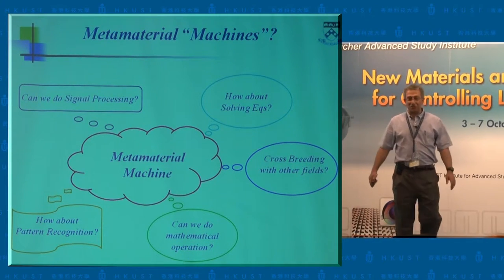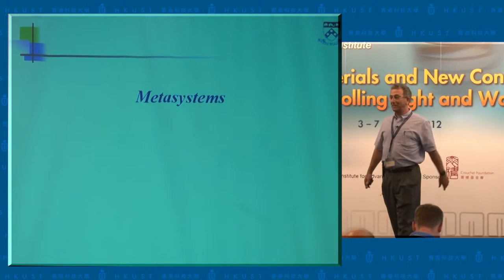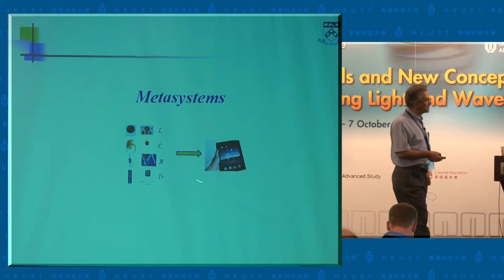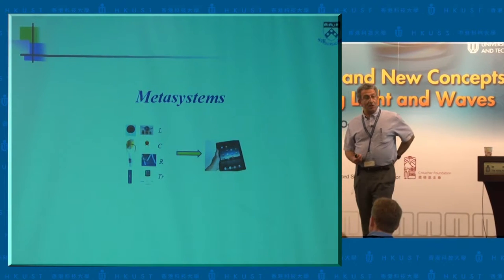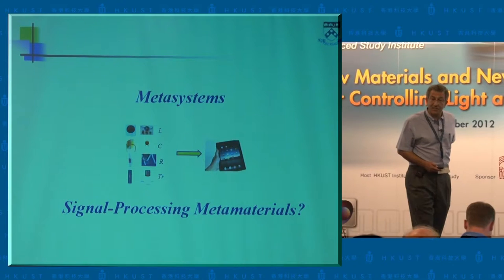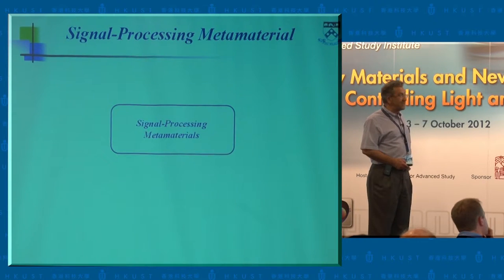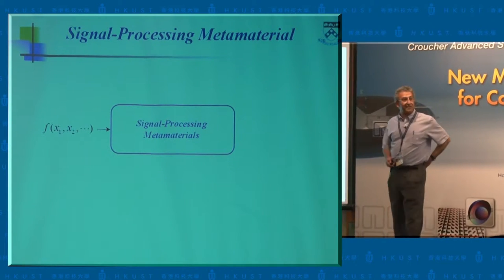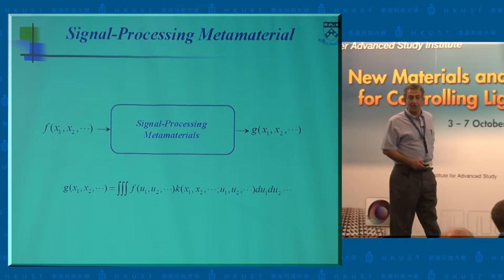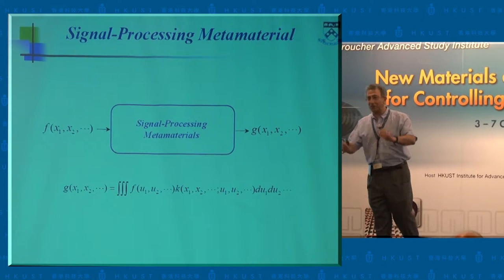Let's start going through cases. For the rest of my talk, I'm going to talk about several cases we have studied. The issue of metasystems — we'd like to have a gadget that does system functionality for us. One interesting thing about these gadgets is signal processing. Can metamaterial do signal processing? The answer is yes, and I call that signal processing metamaterial. We would like to design a metamaterial such that if you give a function f as an input, the output follows a specific mathematical relation — a linear operator, though a nonlinear operator would be more exciting.